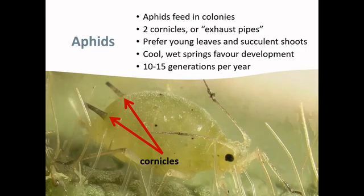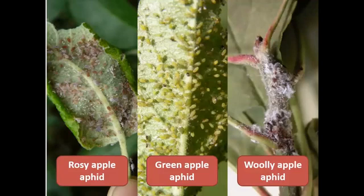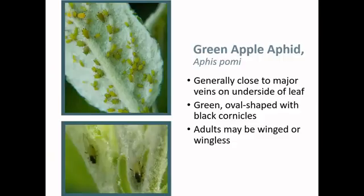Moving on to aphids, there are a number seen in Ontario apple orchards, but in general aphids tend to feed in colonies — it's very uncommon to see one or two aphids on their own. All aphids have two cornicles that extend off their back end, also known as tailpipes or exhaust pipes. Aphids really favor cool wet springs and tend to feed on very succulent lush tissue, so in wet springs with a lot of canopy growth it's not uncommon to see populations get quite high. The species covered here include rosy apple aphid, green apple aphid, and woolly apple aphid.